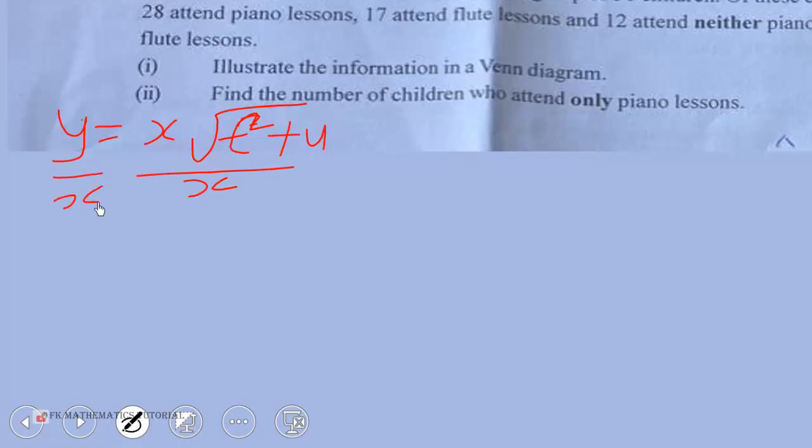If that is the case, we can see this. We are left with y over x here. Y over x is equal to square root of t squared plus u.